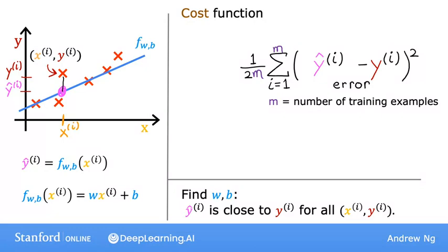And we're going to write j of w,b to refer to the cost function. This is also called the squared error cost function. And it's called this because you're taking the square of these error terms. In machine learning, different people will use different cost functions for different applications. But the squared error cost function is by far the most commonly used one for linear regression. And for that matter, for all regression problems, where it seems to give good results for many applications.